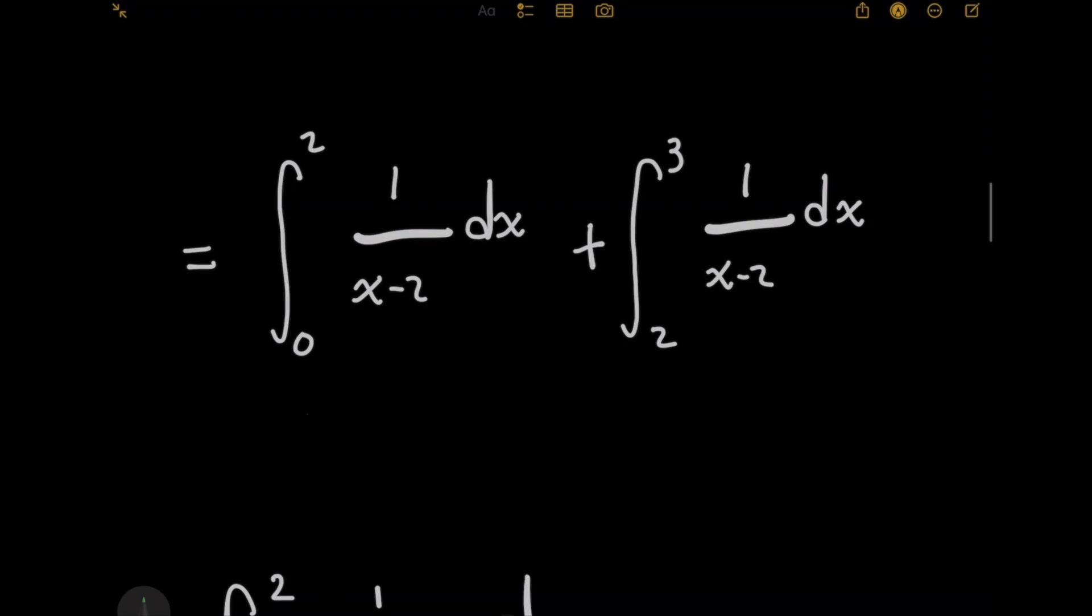Now by inspection, you might be wondering, hey Dave, we still have the same issue because your limits of integration are still using that domain restricted value of 2. And you're correct, but there's a way we can get around that, I'm about to show you how.